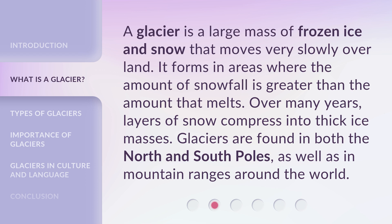A glacier is a large mass of frozen ice and snow that moves very slowly over land. It forms in areas where the amount of snowfall is greater than the amount that melts. Over many years, layers of snow compress into thick ice masses. Glaciers are found in both the North and South Poles, as well as in mountain ranges around the world.